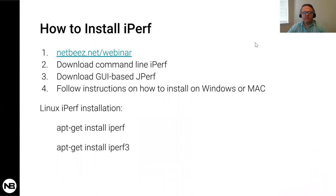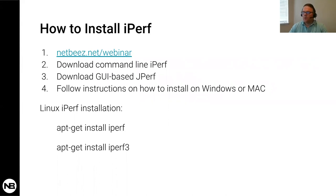How do you install iPerf? If you're attending this webinar, you've already received instructions from us. You can go to netbiz.net/webinar for the links to download iPerf and jPerf. Extract the files and follow the instructions for your platform. On Debian-based Linux, you can install iPerf version 2 with 'apt-get install iperf' and iPerf version 3 with 'apt-get install iperf3'. If you have any questions during the webinar, use the Q&A panel and we'll answer them at the end.